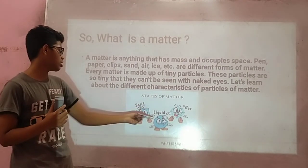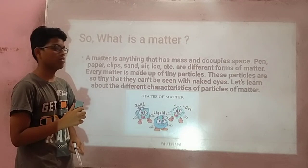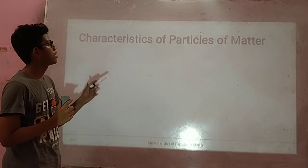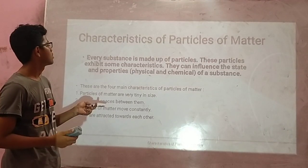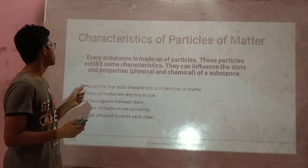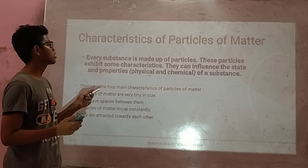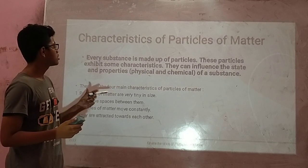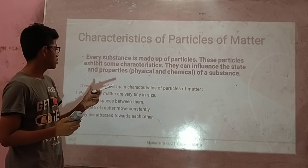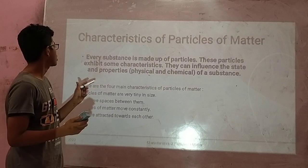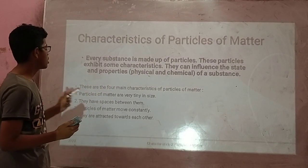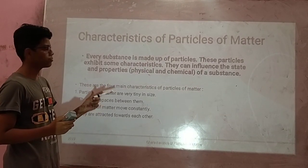The three states of matter are solid state, liquid state, and gas state. Every substance is made up of particles. These particles exhibit some characteristics. They can influence the state and properties — both physical and chemical — of the substance. There are four main characteristics of a particle of matter.